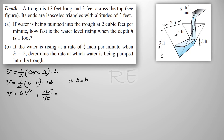dV/dt, the derivative of the volume with respect to time, is equal to 6 times 2H times dh/dt by implicit differentiation. So dV/dt is equal to 12H dh/dt.